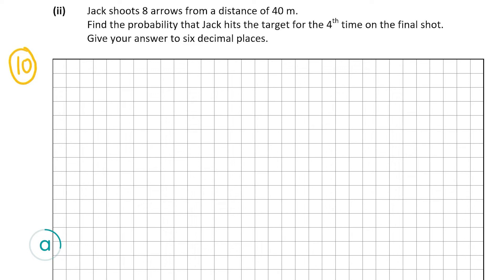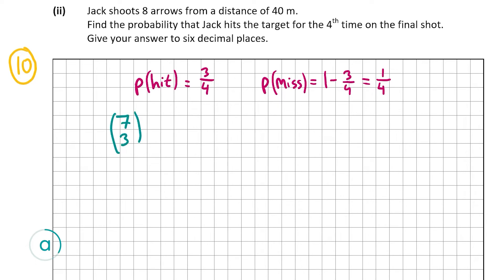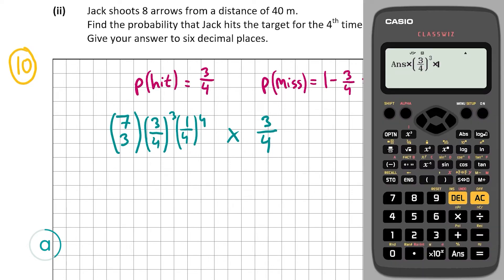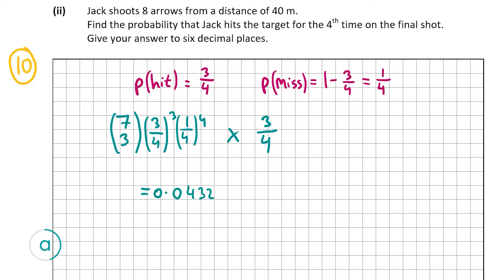The probability of a hit is 3/4 (from A1) and the probability of a miss is 1 − 3/4 = 1/4. For the Bernoulli trial over the first 7 arrows we want exactly 3 hits: C(7,3) × (3/4)³ × (1/4)⁴, then multiply by 3/4 for the 8th shot. That gives 35 × (3/4)³ × (1/4)⁴ = 945/16384, multiplied by 3/4 gives approximately 0.043259 (to six decimal places).